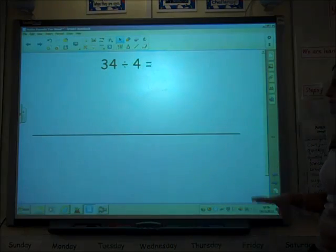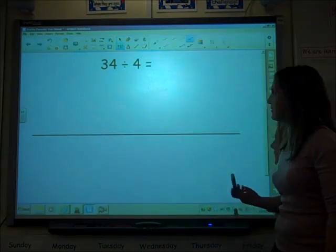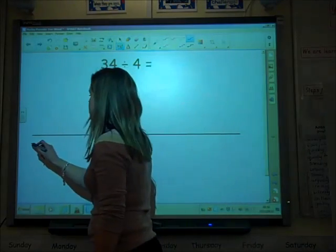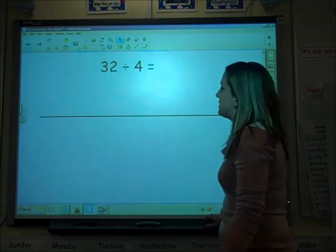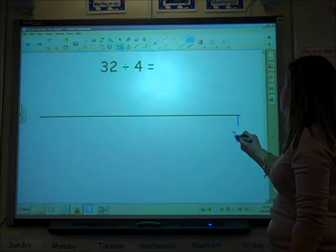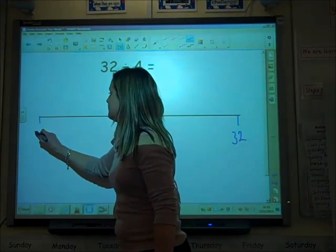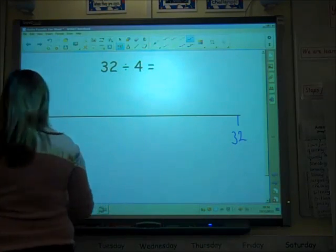Then once we've really got grouping, we'll go back to our lovely number line that we use. So we've got 32 here divided by four, so I'm going to put it into groups of four.